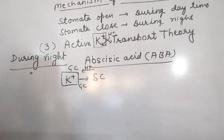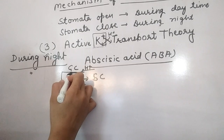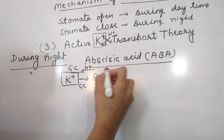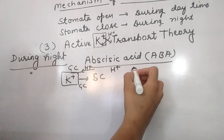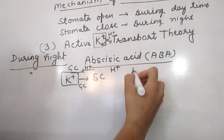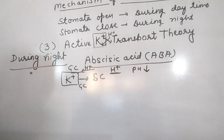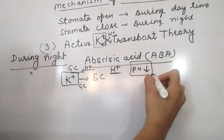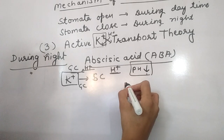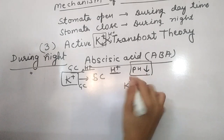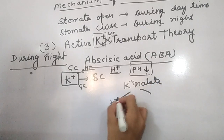Proton ions enter the guard cell, increasing concentration and making the medium acidic — pH level drops. The acidic pH causes potassium malate to break down, releasing potassium and malate separately.